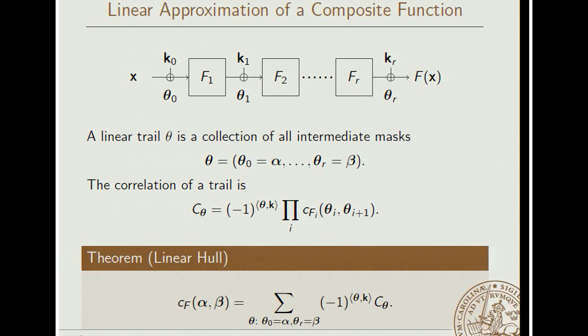What's nice about this definition of the correlation of trail is that then the correlation of an approximation is simply the sum over all trails of the correlations of each trail. Now a block cipher not only typically looks like this, but also like this. We have linear round key additions in between each of these rounds. And then we update this slide slightly. The correlation of a trail is the product as previously of the correlations, but we then flip the sign. We choose the sign depending on the particular key that we are using. And then this summation formula is updated accordingly. We add together all these correlations of the trail, but with change signs depending on the key. And this is usually referred to as the linear hull equation.